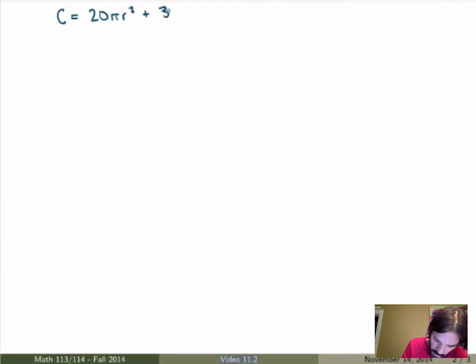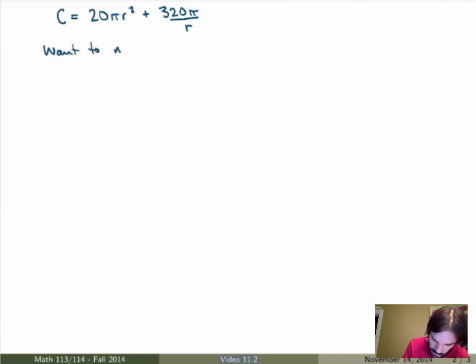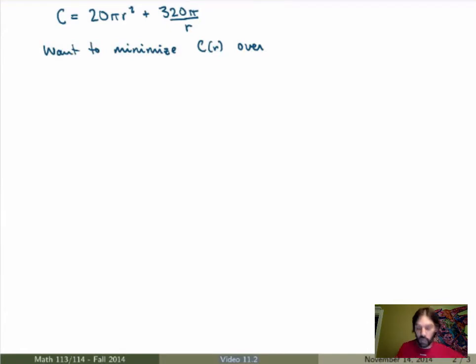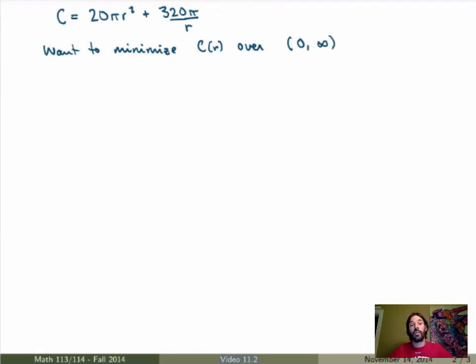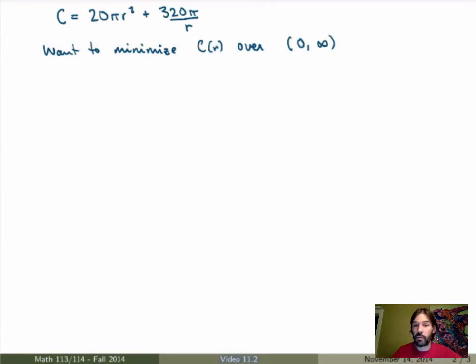Moving to a new slide. The cost function is C(r) = 20πr² + 320π/r. We want to minimize C as a function of r. The domain is r ∈ (0, ∞) — the radius can't be 0, but can be any positive number. This is not a closed interval, so we can't use the closed interval method. Instead, we find the critical points and study the properties of the function to find the absolute minimum over the domain.